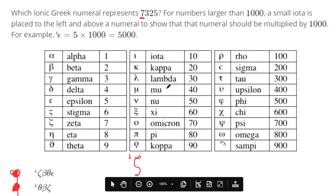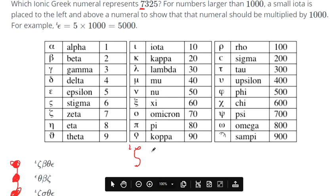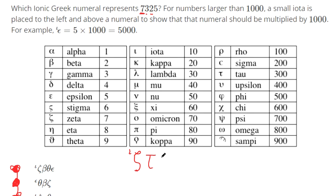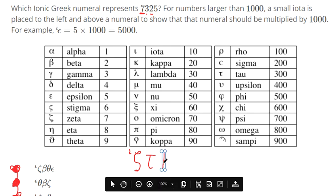And then we need 3 in the 100s place, so we've got tau for that. We need 2 in the 10s place, so that's a 20. That's kappa, which we just saw in the last one. And then we have 5. That's epsilon.